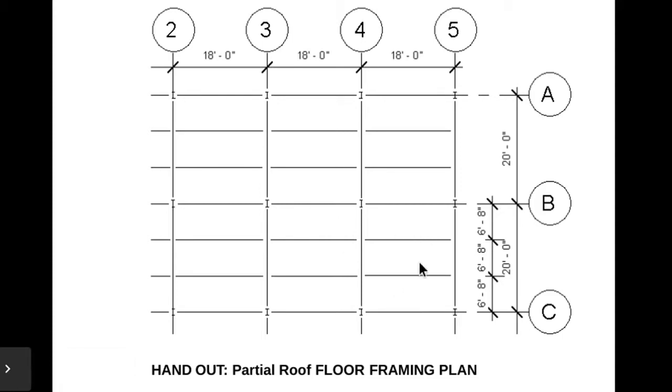If you look at this, we have 6'8", 6'8", 6'8". If you're looking at the tributary width of this beam, you would take half of 6'8" and half of 6'8" and add those together, which equals 6'8". If your beam spacing is symmetric, it's equal to one of the beam spaces—half of one and half of the other.